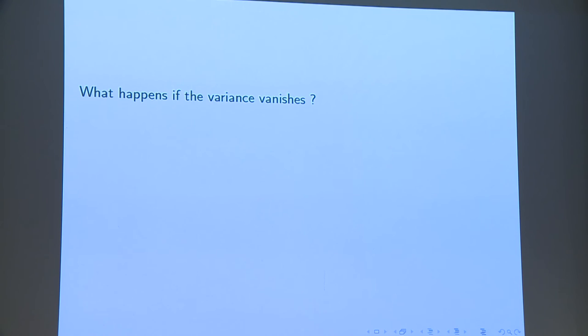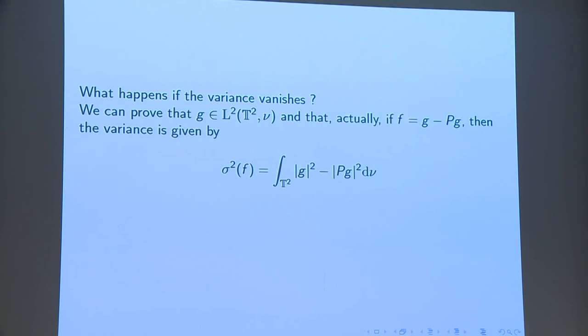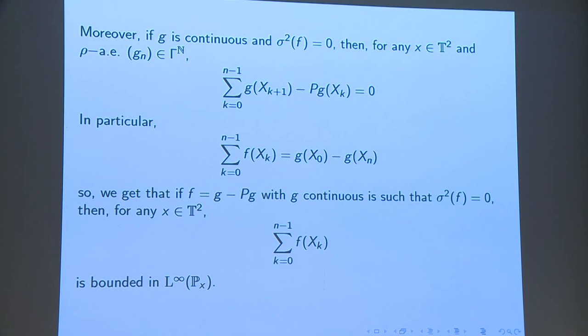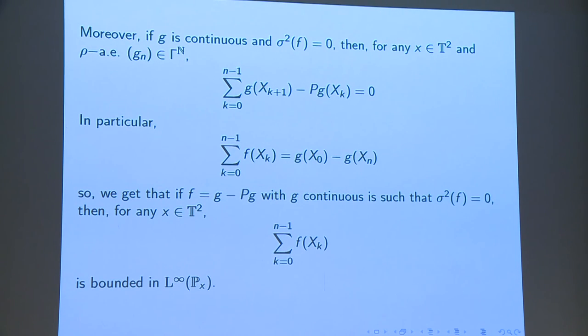What happens if the variance vanishes? So what we can prove is that we have a formula for the variance. It's given by this, σ² of f is just the integral that I wrote on the board. And we can prove that if this variance is zero, then actually the sum of the f of xₖ is bounded in L infinity. This means that if the variance is zero, you cannot renormalize your sum. It will always converge to zero.